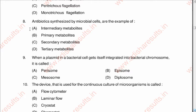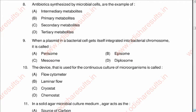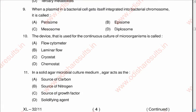Question eight: Antibiotics synthesized by microbial cells are the example of A: intermediary metabolites, B: primary metabolites, C: secondary metabolites, D: tertiary metabolites. The correct answer is C: secondary metabolites.